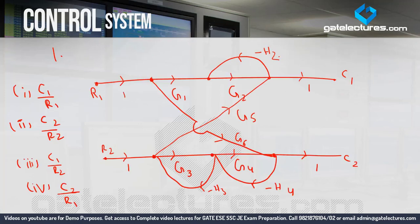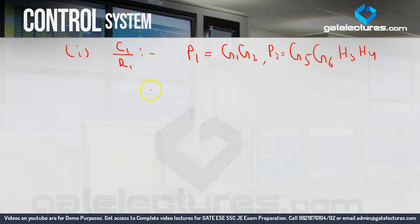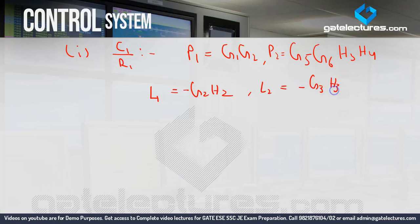Now we need to find the loops. One loop is directly visible: minus G2 H2. Similarly, on the lower side, there are two loops: G3 H3 and G4 H4. So three loops are identified: L1 = minus G2 H2, L2 = minus G3 H3, and L3 = minus G4 H4.